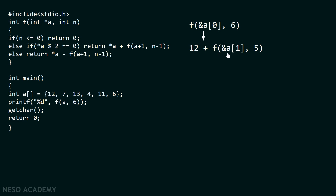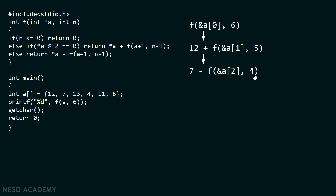We are passing the address of A[1], that is the second element, to pointer A, and passing value 5 to variable n. With n equal to 5, the n less than zero check is not satisfied. We then check the even condition: A[1] is the second element which is 7, and 7 mod 2 is not equal to 0. Therefore, this condition is not satisfied and we return: 7 minus F of (&A[2], 4).